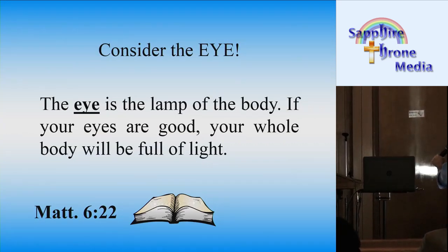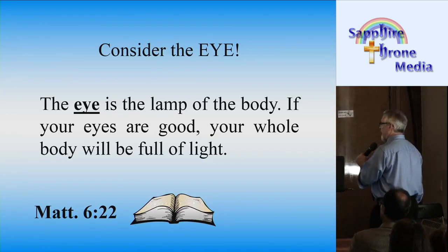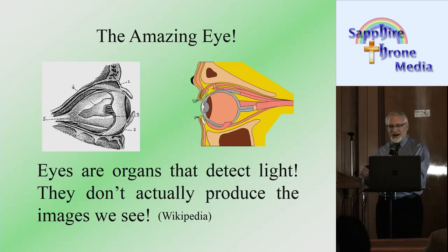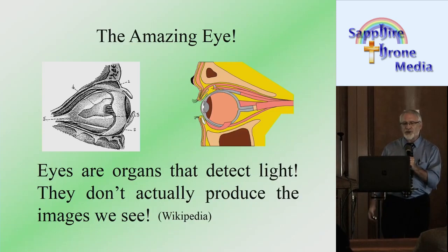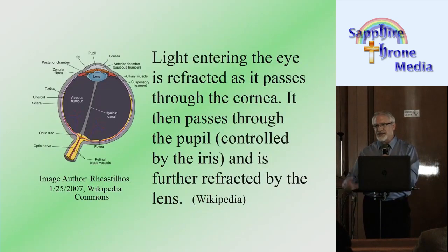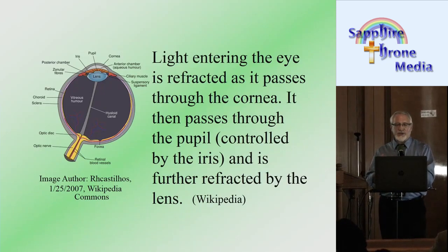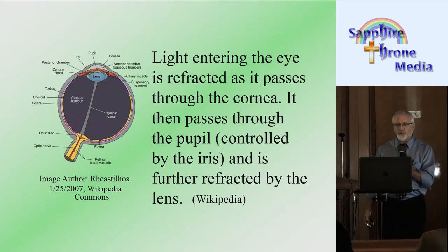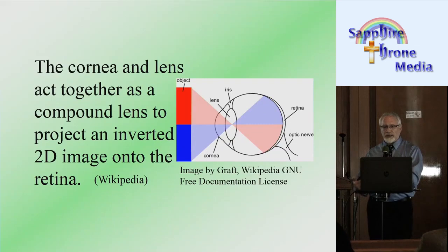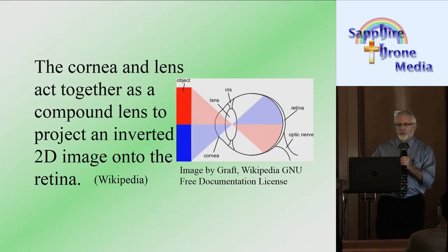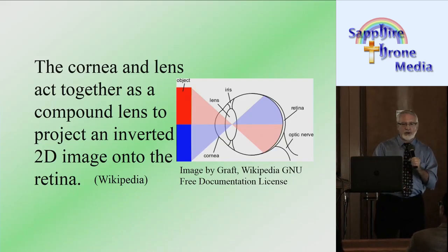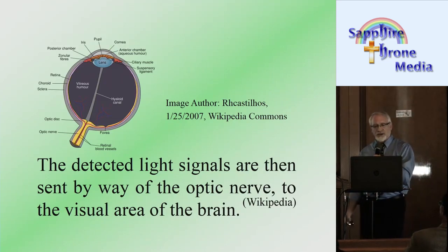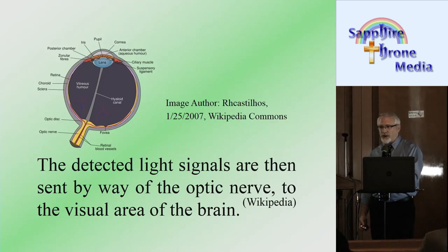Let's consider the eye. The eye is the lamp of the body. Eyes are organs that detect light — they don't actually produce the images that we see. Light enters the eye, it's refracted, and it passes through the cornea. It then passes through the pupil, controlled by the iris, and is further refracted by the lens. The cornea and lens act together as a compound lens to project an inverted 2D image onto the retina. The detected light signals are then sent by way of the optic nerve to the visual area of the brain.